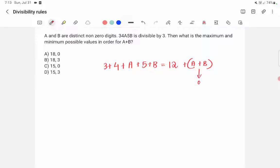Similarly, if A plus B is equal to 3, this will become 15. So 15 is also a multiple of 3. Therefore, that number will be divisible by 3.